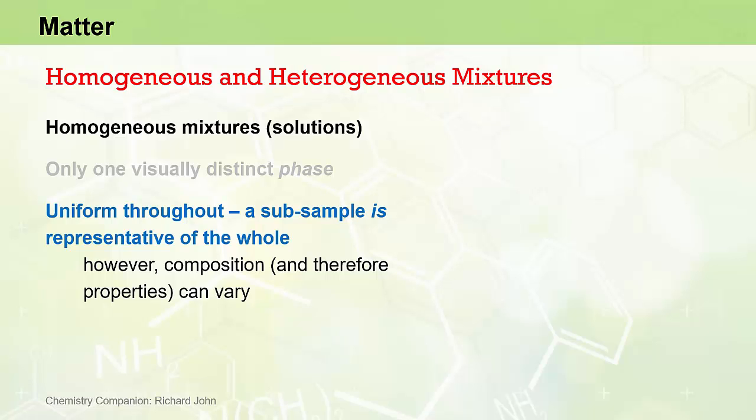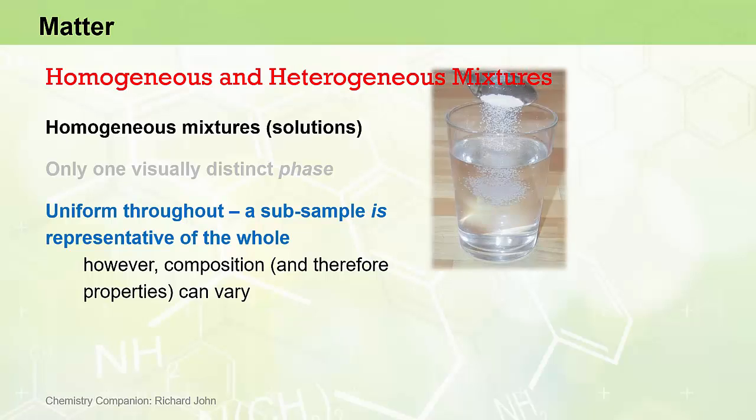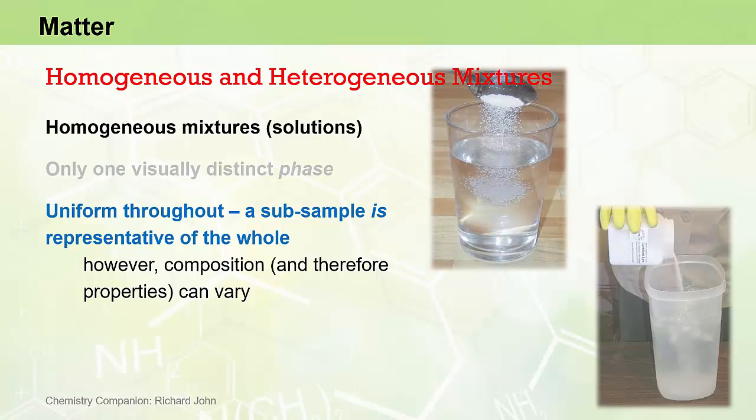For example, we might have two samples of salt water prepared by dissolving first a small amount of salt in water, and second, a much larger amount of salt in water. Both solutions will be homogeneous and uniform throughout, but both will have different compositions and different physical and chemical properties, including different densities, electrical conductivities, and boiling points.